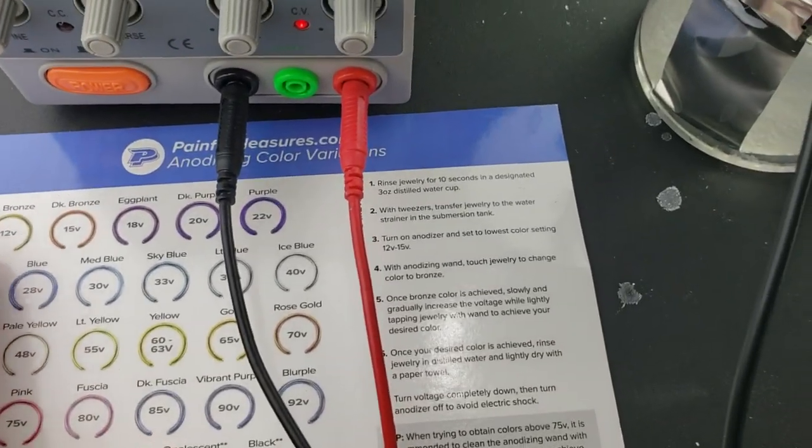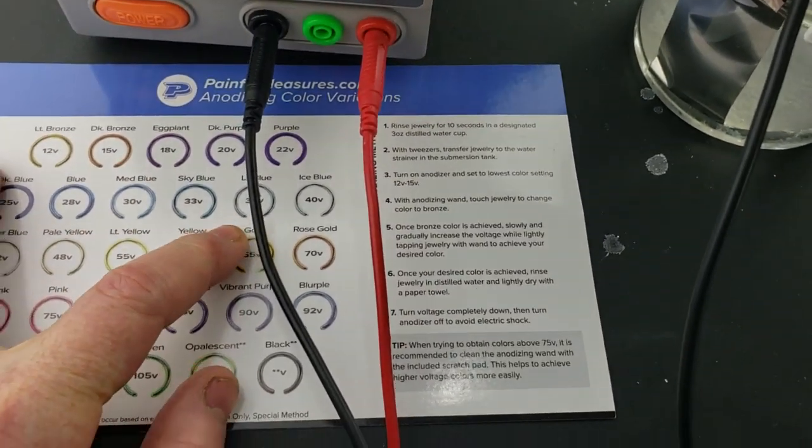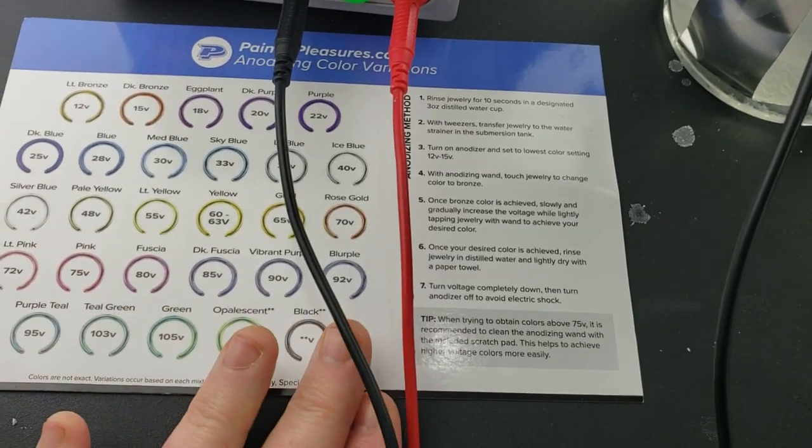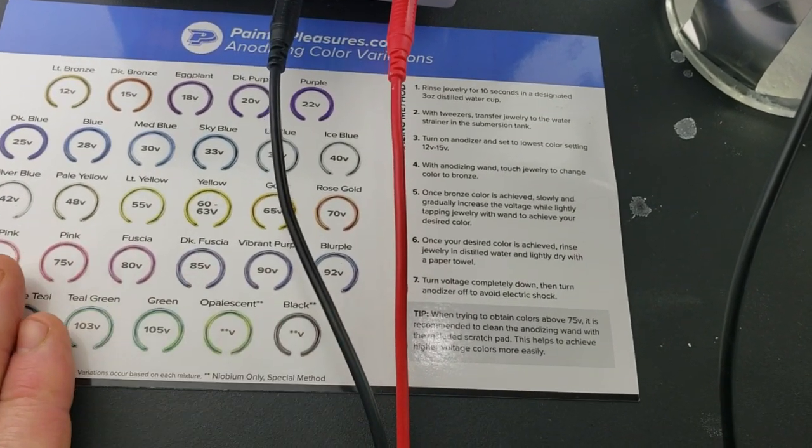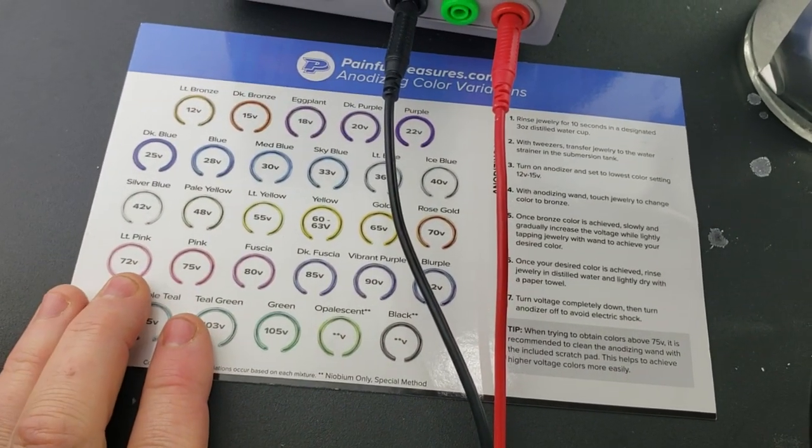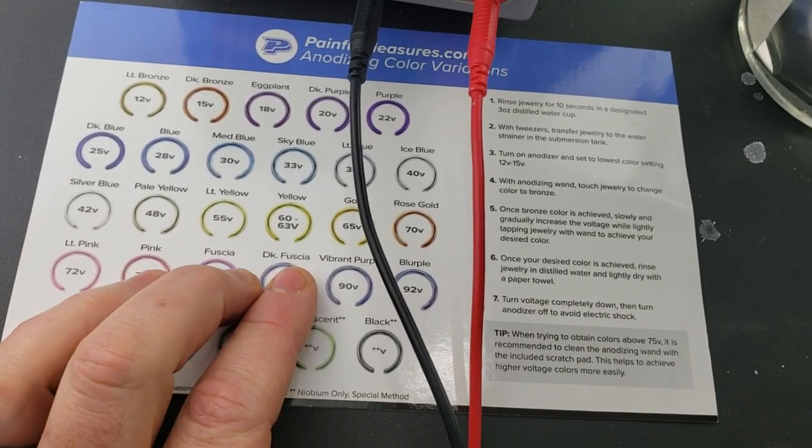The way this happens is the titanium goes through all these colors until it gets to the one you're aiming for. Initially, I'm going to put the entire thing in and anodize it in gold.